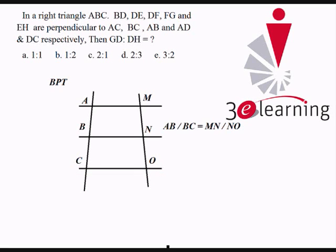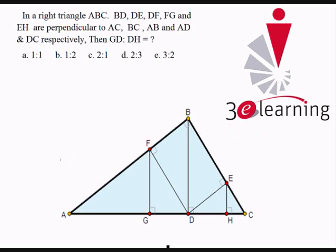I am just going to use this concept in this figure. You can solve this question either by similarity or by coordinate geometry or by any other means. Let's try the BPT in this question. This is our figure. ABC is a right angle triangle, BD perpendicular to AC,